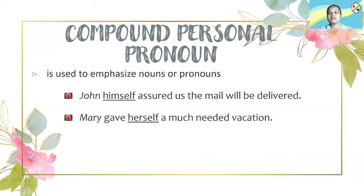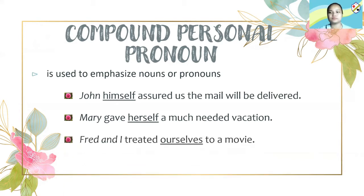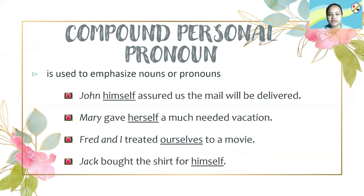When we say intensive pronoun, it acts as the direct object. For example: Mary gave herself a much-needed vacation. Mary gave who? Herself. So 'herself' here is a direct object and it cannot be omitted in the sentence. Another example: Fred and I treated ourselves to a movie — 'ourselves' acts as a direct object. And for reflexive: Jack bought the shirt for himself.